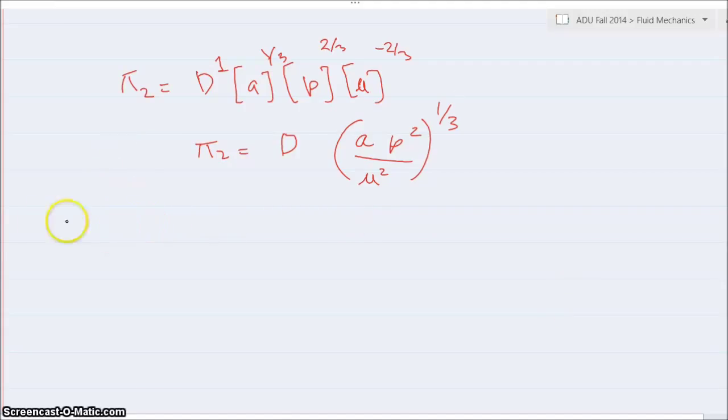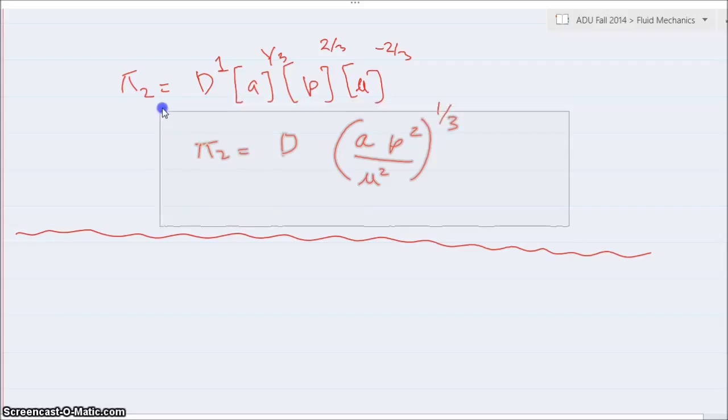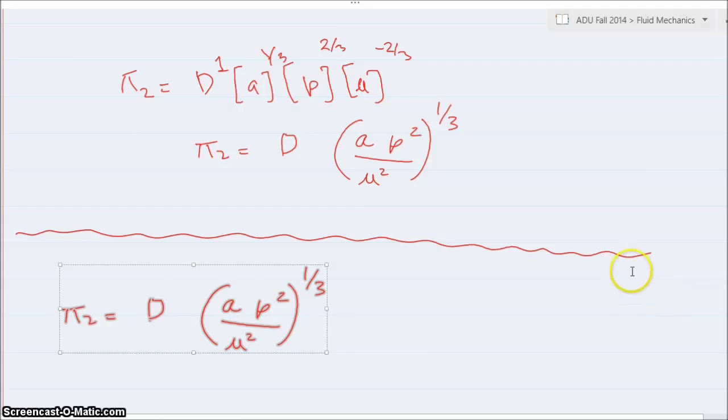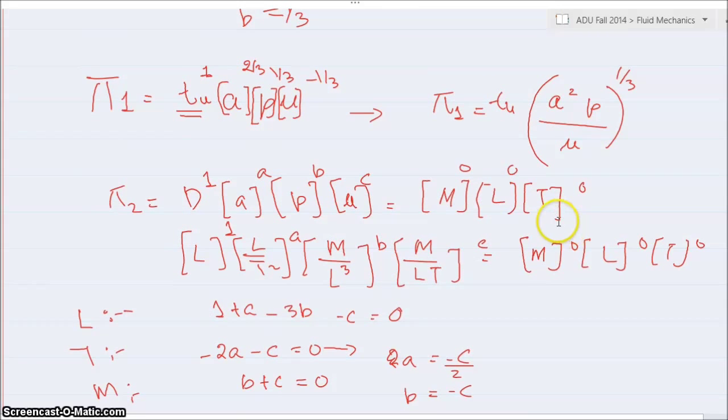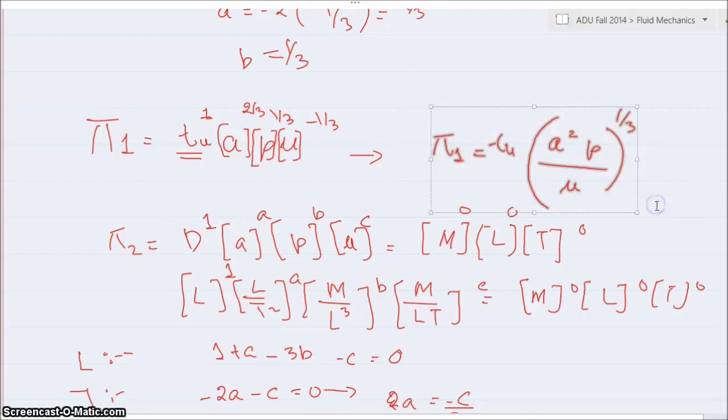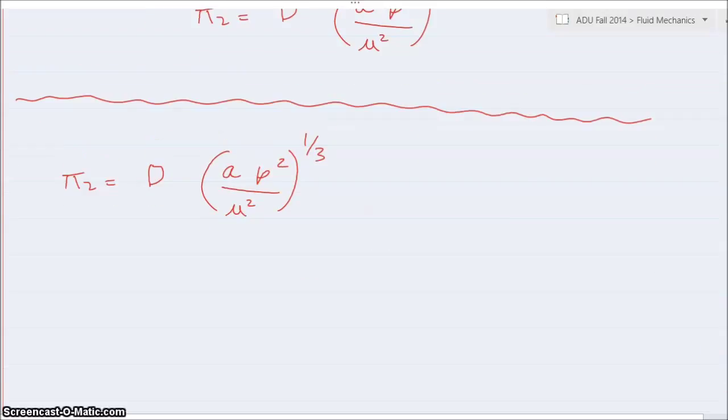So this is my second pi. So let me write down, let me write these two pis together and understand what's happening. So we have pi 2, and let's copy pi 1. So we have d a rho square.